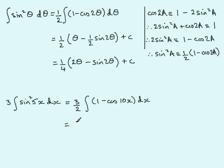So we have the 3 over 2 at the front. And the integral of 1 now, with respect to x, is simply x. And the integral of negative cos 10x, with respect to x, is minus 1 tenth of the sine of 10x. And then we have the constant of integration, plus c.